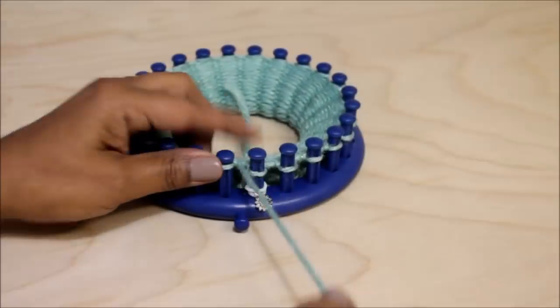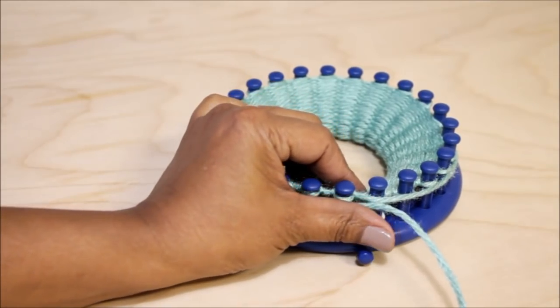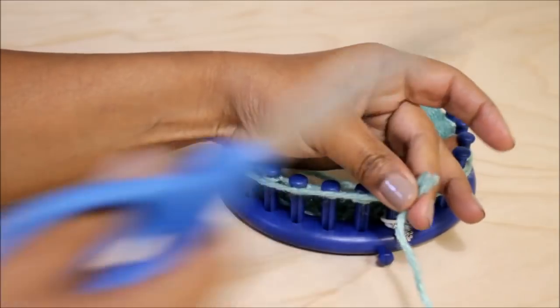When I'm done with my 18 rows I'm going to cast off using a drawstring cast off. Wrap the yarn around the loom just one time, you don't have to do more than that. I cut my yarn.